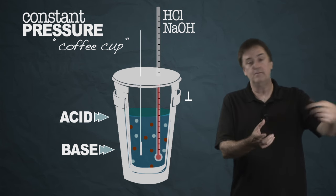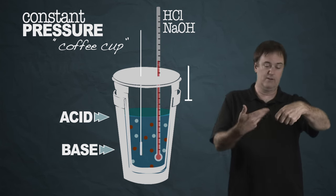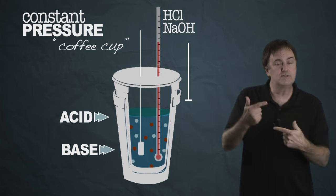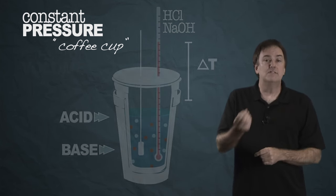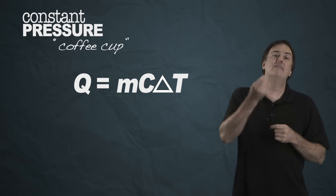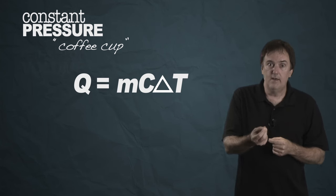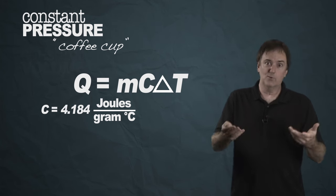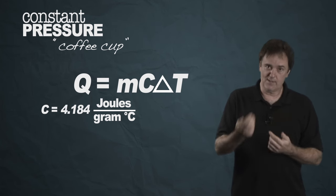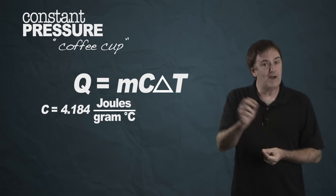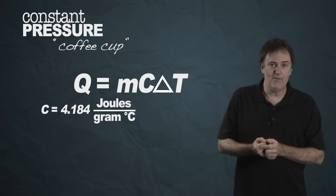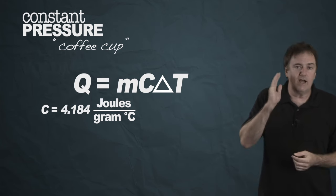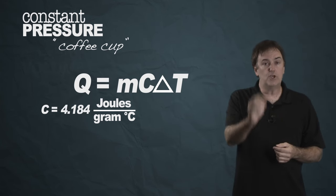You look at the thermometer before, pour it in, stir, look at it when it stops. You've got yourself a delta T. From that delta T, you simply multiply that by the heat capacity of the water, which is 4.184 joules per gram per degree C, and you multiply it by the mass of the water, which you can easily weigh by sticking it onto a scale. Put all that together, and you've got your amount of heat, which we call Q.